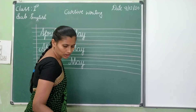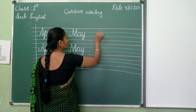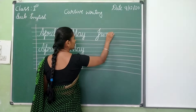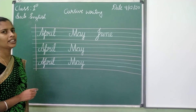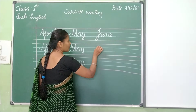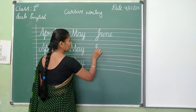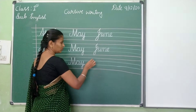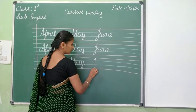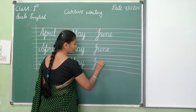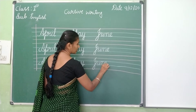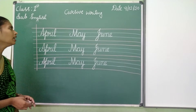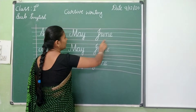May, after June. June. J — you should write J here. U, N, E. June. J, U, N, E. June. Once again. J, U, N, E. June. J, U, N, E. June. April. M, A, Y. May. J, U, N, E. June.